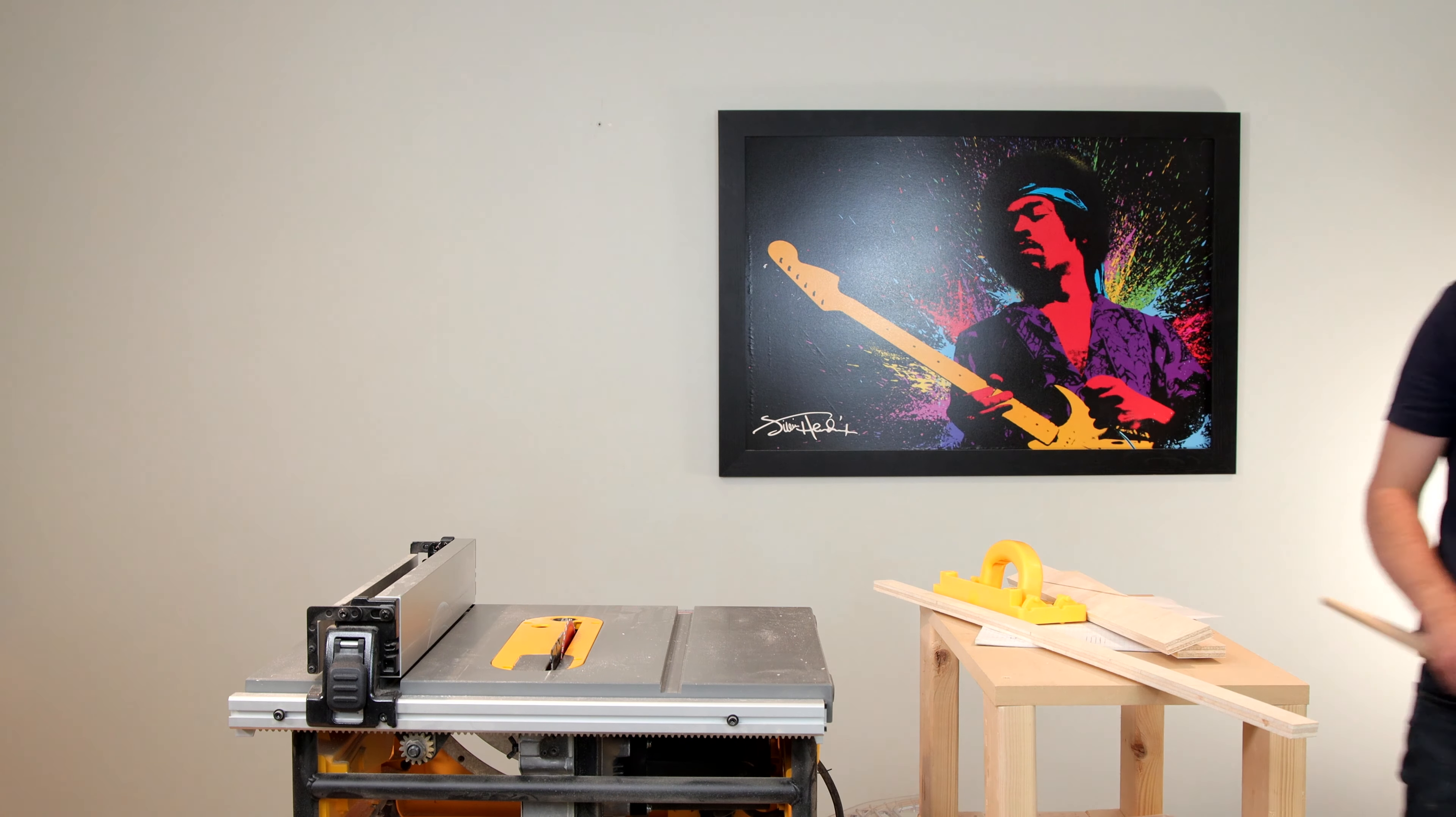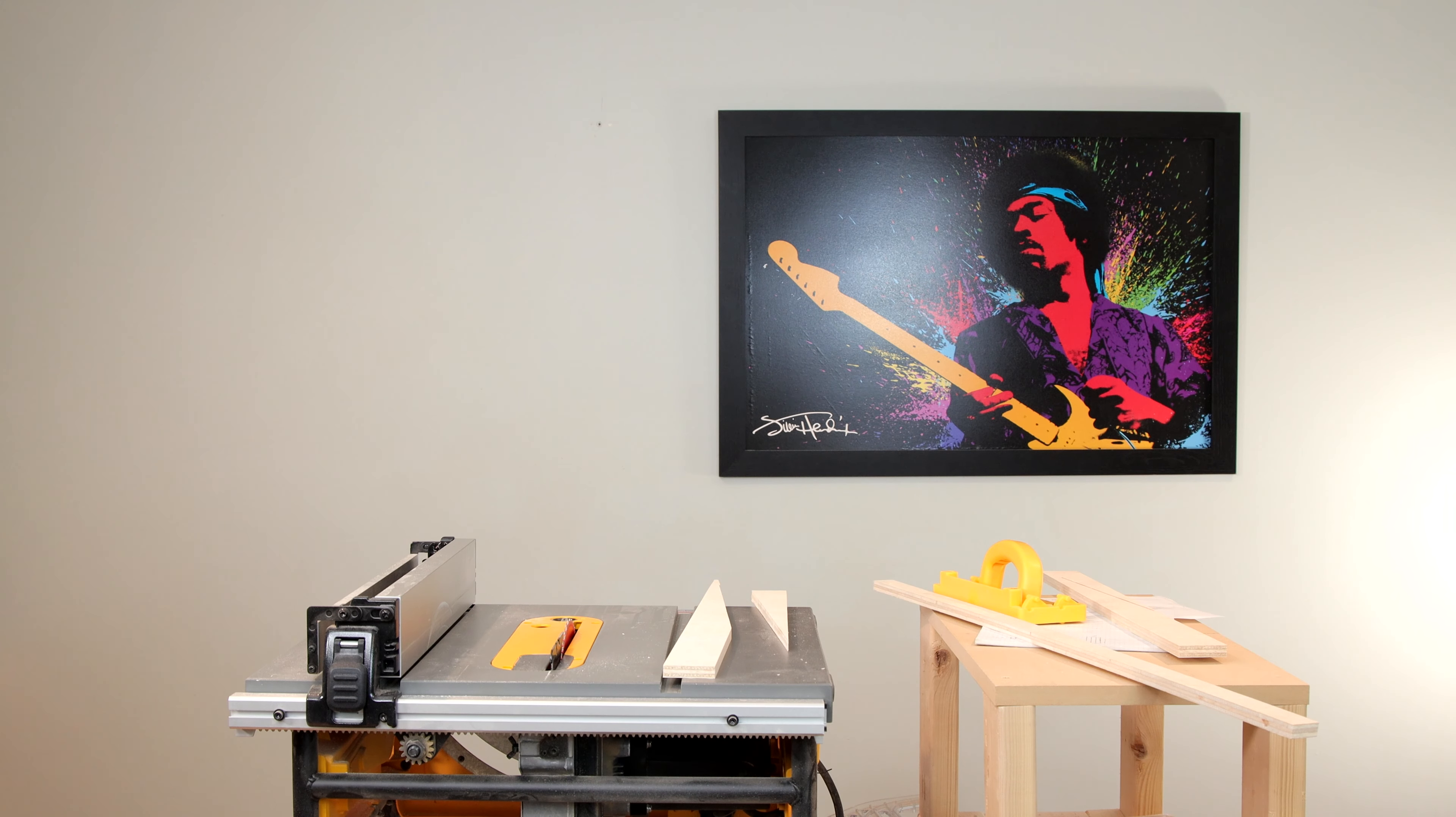Now I'll go over to the bandsaw to complete the cuts. With a little sanding, they should come out perfect. If you have a nice Rockler taper jig, you can make the complete taper cut on the table saw.